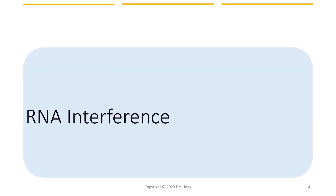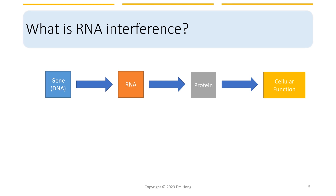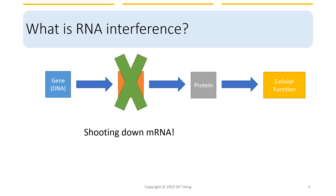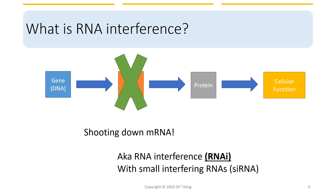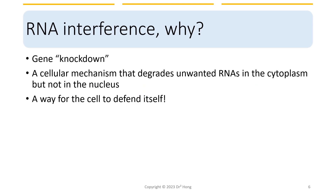So what is RNA interference? RNA interference is a natural cellular process that can be harnessed to silence or knock down specific genes by shutting down the messenger RNA with small interfering RNAs. The purpose of RNA interference is to silence or knock down specific genes, selectively targeting and degrading unwanted messenger RNA molecules that encode for a specific gene in the cytoplasm. Essentially, it is a way for the cell to defend itself.